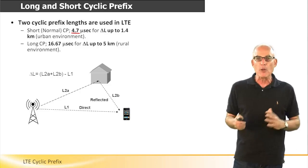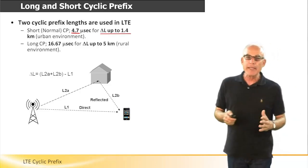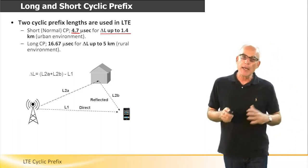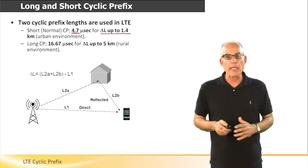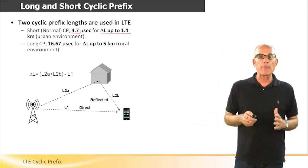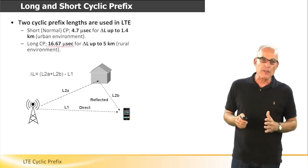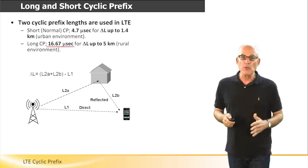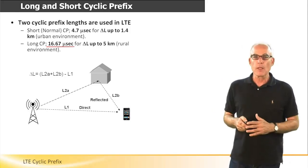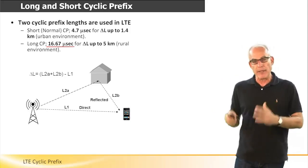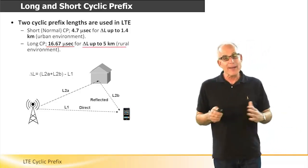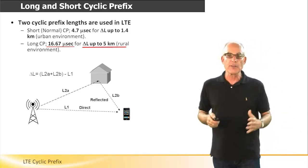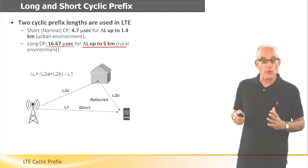LTE defines another length of cyclic prefix: 16.67 microseconds. This can be used in rural areas where reflections creating multipath arrive from relatively long distances, like five kilometers or so.